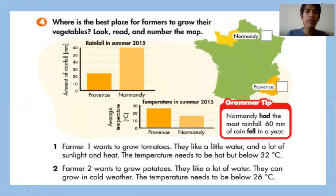Here we have a little exercise about where is the best place for farmers to grow their vegetables. We have rainfall in summer and we have temperature in summer. We have farmer one and we have farmer two.